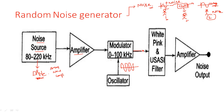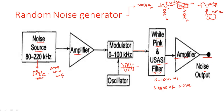After modulation, we pass this modulated signal through a filter. In the 0 to 100 kilohertz range, the filter generates three different types of noise signals: white noise, pink noise, and USASI noise. After the modulated signal passes through the filter, these three different noisy components are produced. Then some amplification is done and we get the complete noise output.